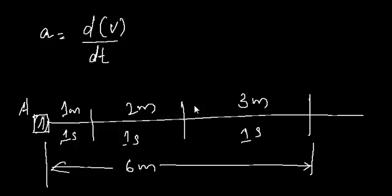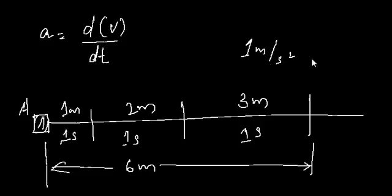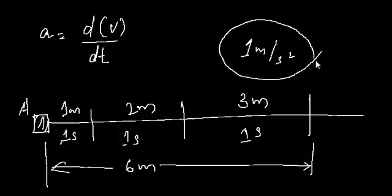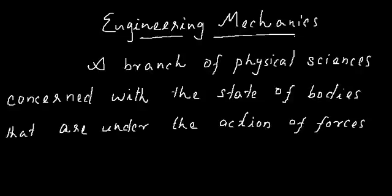Between the first and second second, distance covered increased from one to two; between the second and third, from two to three. The rate of increase is one — your velocity increases by one meter per second each second. Therefore, the acceleration in this case is one meter per second squared. That's how the units go from meters per second to meters per second squared.